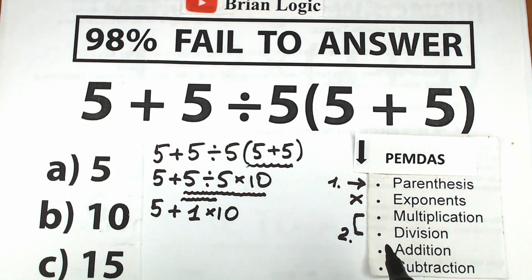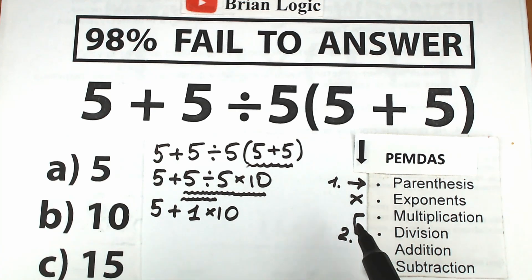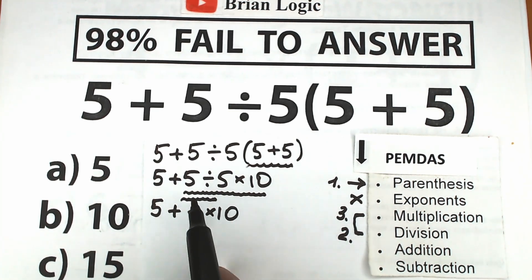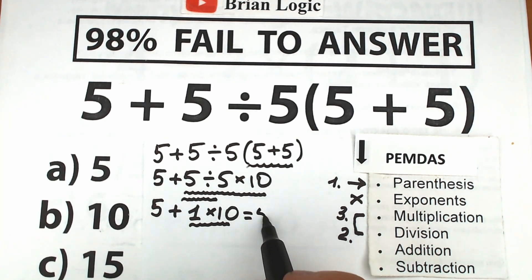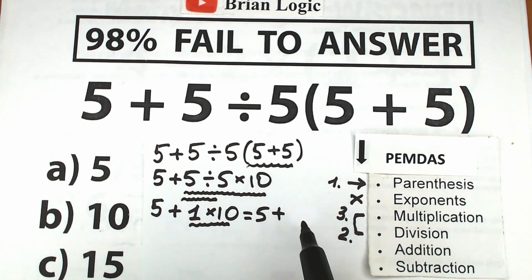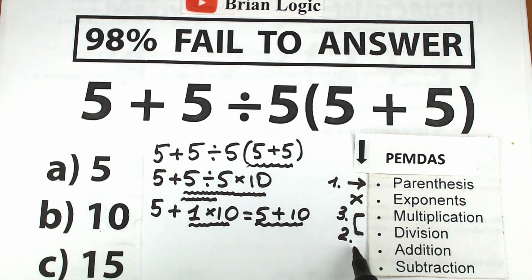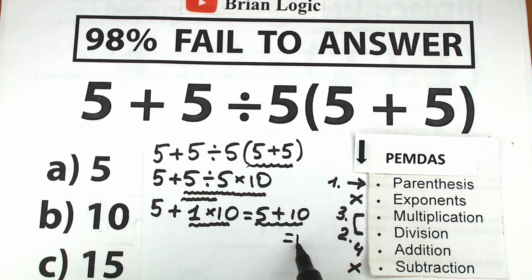So here we're dividing first — that's the second step, division. Then the third step is multiplication. We complete: 1 times 10 equals 10. As a result, we have 5 plus 10. The fourth step is addition: 5 plus 10 equals 15.